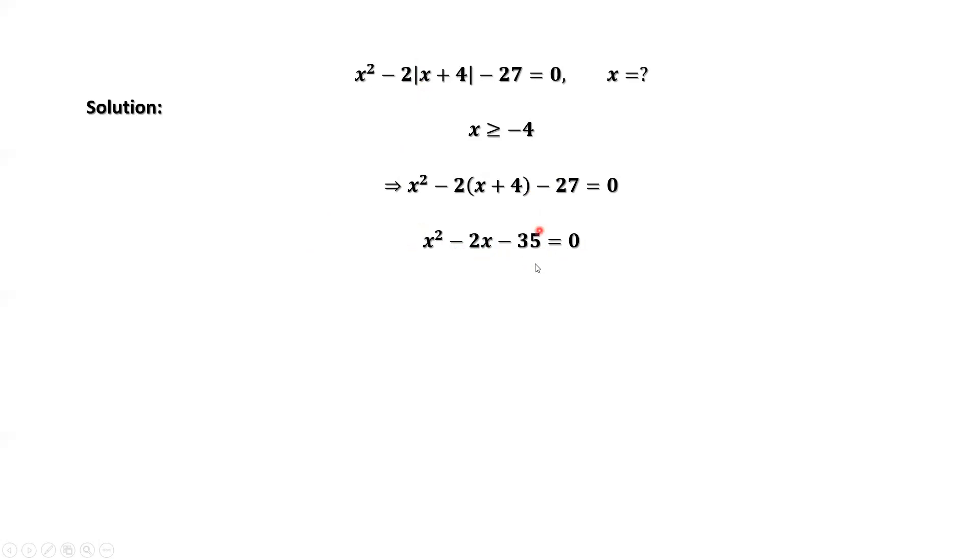Factoring the left-hand side, we have two solutions: x equals 7, x equals negative 5. Because x is bigger than or equal to negative 4, negative 5 is not the answer. The only answer is x equals 7.